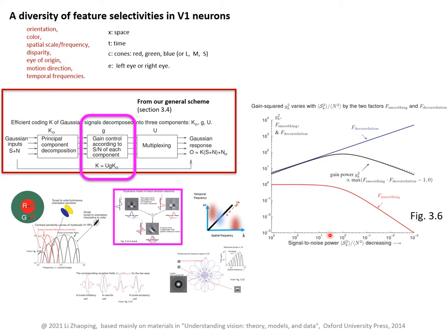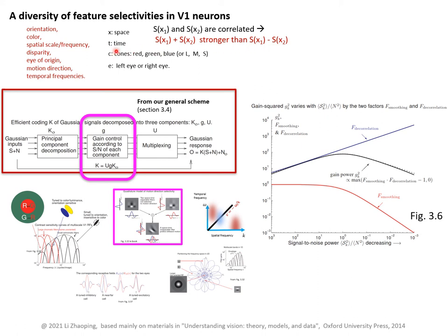Now let's use this idea to understand feature tunings observed in V1 neurons. Because inputs are correlated in each of these input dimensions, every time you take an input change along any of them you reduce the input power. For example, in the spatial dimension, signals at locations x1 and x2 are correlated in natural scenes — summing two correlated signals gives stronger power than taking their difference. Similarly, signal in time is correlated, so integrating in time makes the signal stronger, while taking differences in time yields weaker signal.